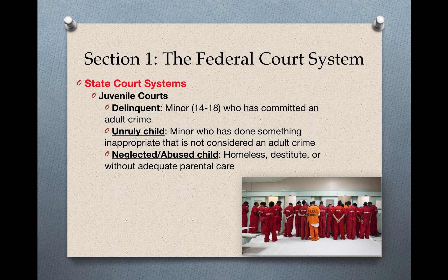An unruly child is a minor who has done something inappropriate that is not considered an adult crime. So this could be skipping school, smoking, or violating a curfew. A neglected or abused child is one who is homeless or without adequate parental care.